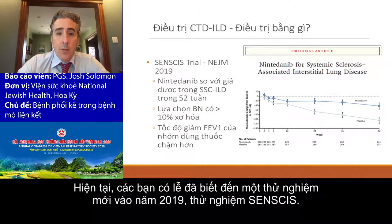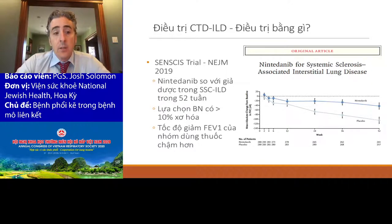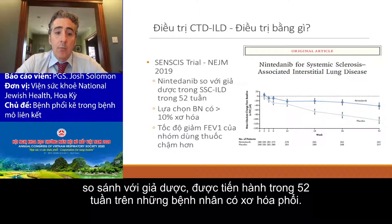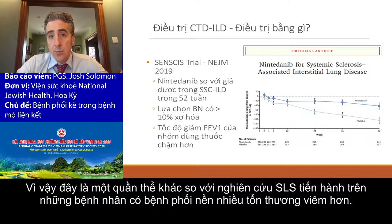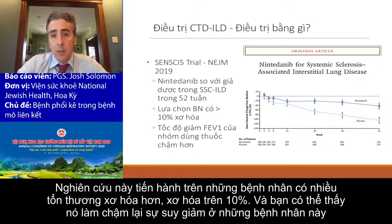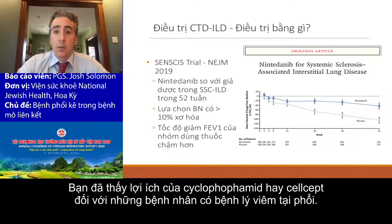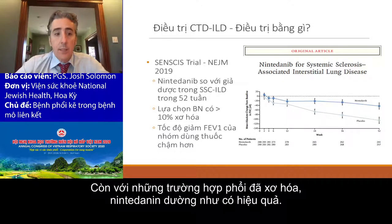You're probably familiar with the new trial from 2019, the SENSCIS trial. This looked at patients with systemic sclerosis and nintedanib — a tyrosine kinase inhibitor, an anti-fibrotic therapy approved in IPF in the US — versus placebo over 52 weeks, enrolling patients with fibrosis. It found that patients on nintedanib versus placebo had a slower rate of decline in forced vital capacity over time. Patients who enrolled had to have more fibrotic lung disease — at least 10% fibrosis. This tells us that patients with systemic sclerosis who have more of an NSIP without fibrosis should be treated with CellCept, and if you have fibrotic disease, nintedanib appears effective.